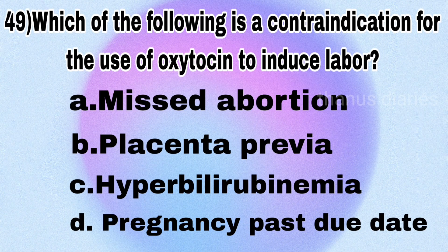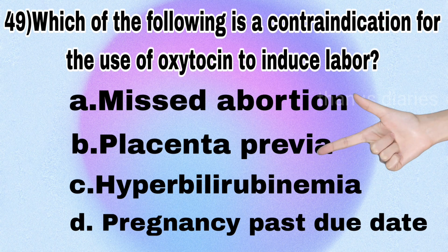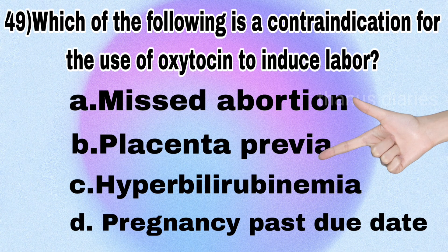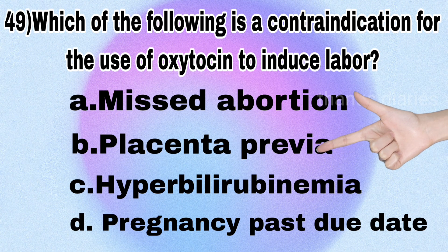Next question: which of the following is a contraindication for the use of oxytocin to induce labor? — Missed abortion, placenta previa, hyperbilirubinemia, or pregnancy past due date? It's placenta previa.